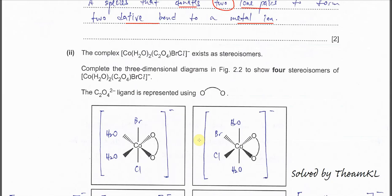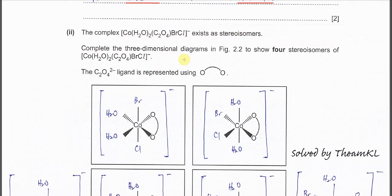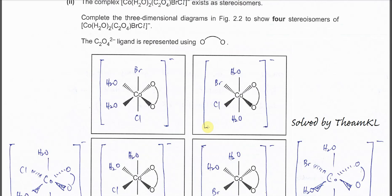Okay part two. Now we have this complex ion, cobalt with two H2O and this bidentate ligand and another two monodentate ligands which are bromide and chloride. And this one exists as stereoisomers. Complete the three-dimensional diagram in the following figure to show four stereoisomers for this complex ion. This question is quite complicated.